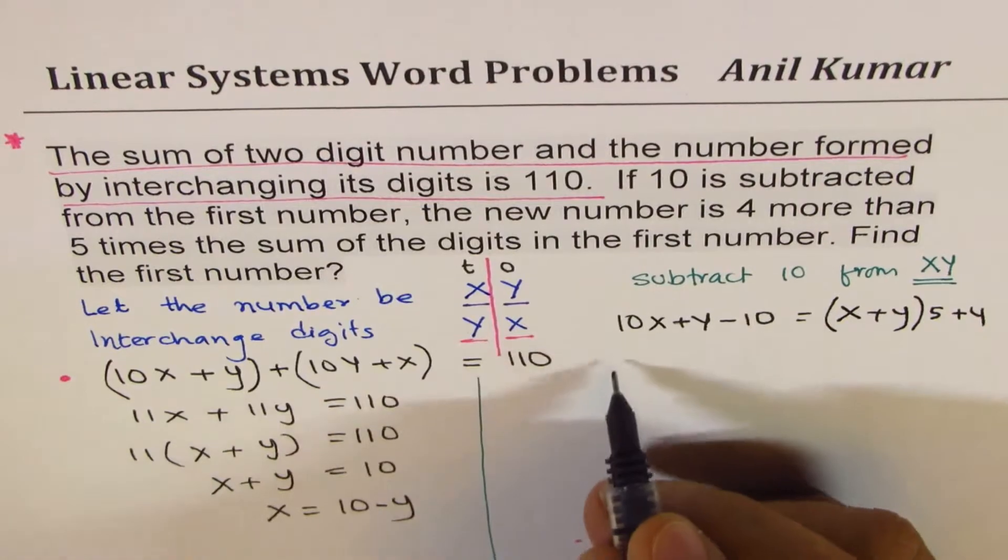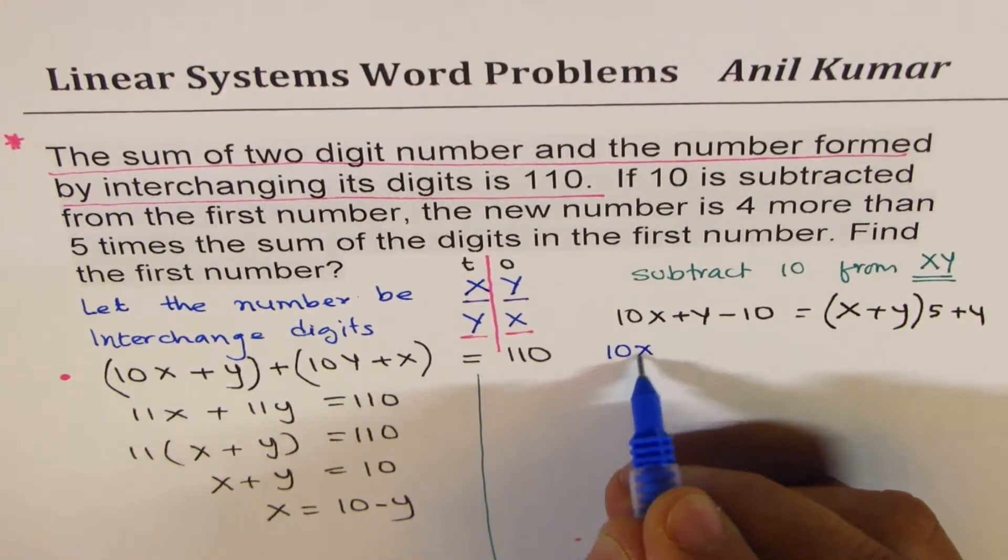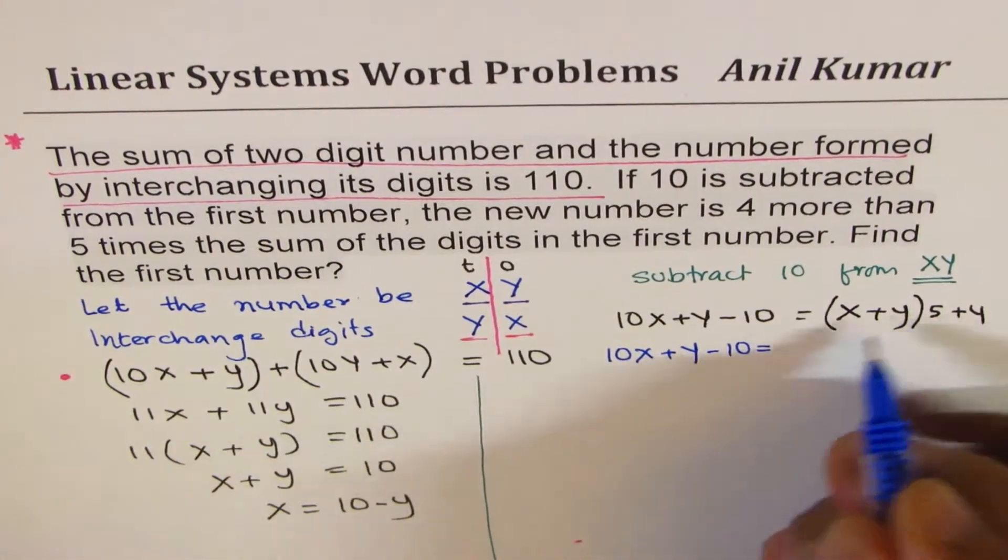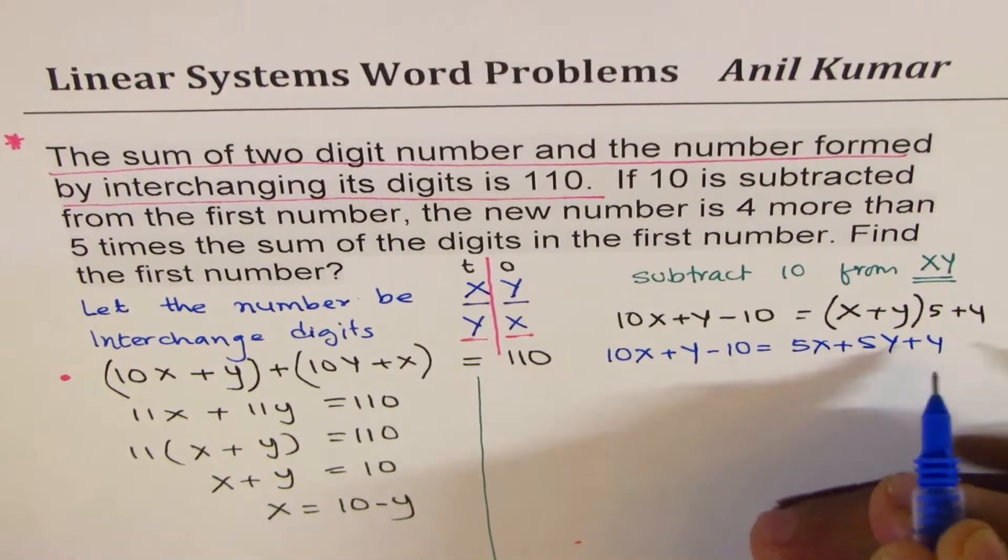So let's rearrange this. So we have 10x plus y minus 10 equals to, open the bracket, 5x plus 5y plus 4. Now it's simpler.